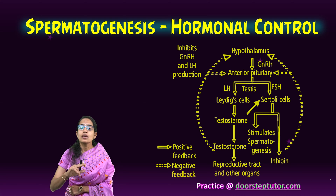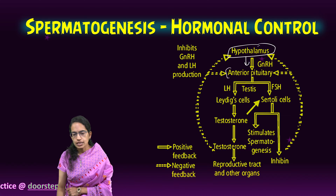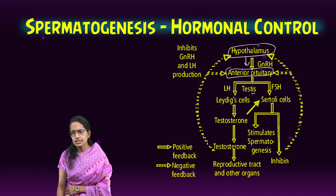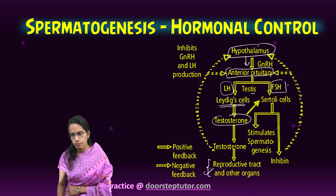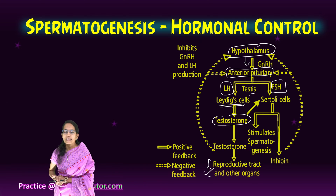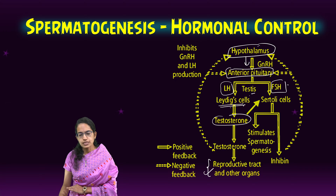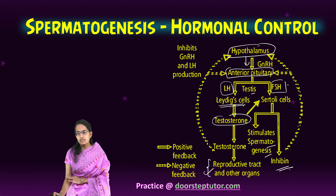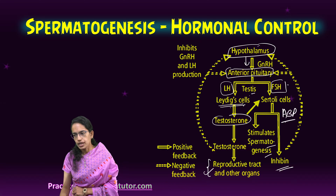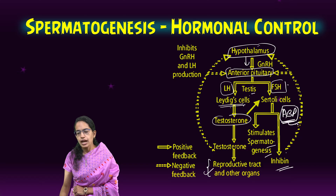Spermatogenesis is actually happening because of the function of growth hormones from the hypothalamus. The signal goes to the anterior pituitary, and in the testes there is LH and FSH. LH acts on the Leydig cells and stimulates secretion of testosterone, which helps in the development of the reproductive organs. FSH acts on the Sertoli cells and increases secretion of ABP, stimulating spermatogenesis. ABP concentrates the testosterone in the seminiferous tubules — that is a very important role for ABP.